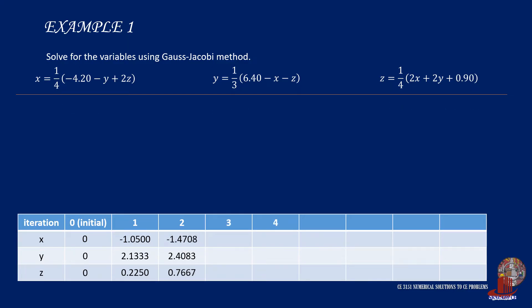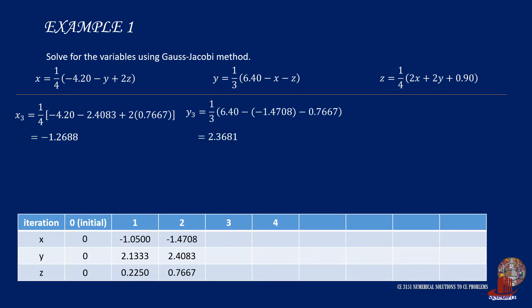Because the trend isn't clear yet, we continue to the third iteration. x₃ is one fourth of negative 4.2 less 2.4083 plus 2 times 0.7667, giving negative 1.2688. y₃ is one third of 6.4 minus negative 1.4708 minus 0.7667, resulting in 2.3681. Then z₃ is one fourth of 2 times negative 1.4708 plus 2 times 2.4083 plus 0.90, giving 0.6938.